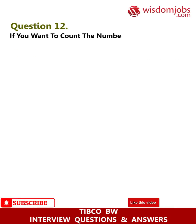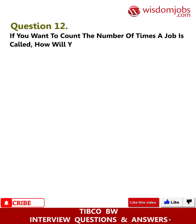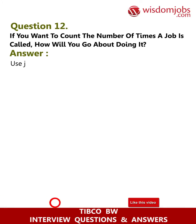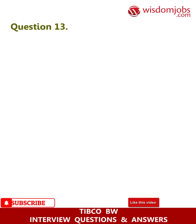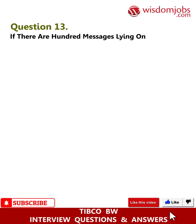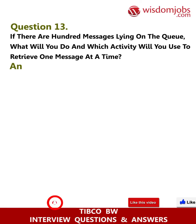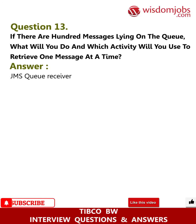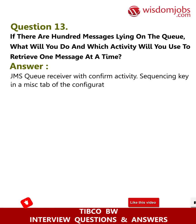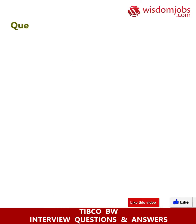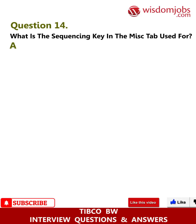Question 12: If you want to count the number of times a job is called, how will you go about doing it? Answer: Use a job shared variable in a critical section. Question 13: If there are 100 messages lying on the queue, what will you do and which activity will you use to retrieve one message at a time? Answer: Use JMS Receiver with a Confirm activity. Sequencing key in the Miscellaneous tab of the configuration could also be used. Question 14: What is the sequencing key in the Miscellaneous tab used for? Answer: It is used to call process instances in the order they are created.